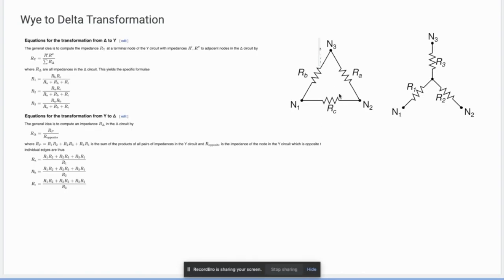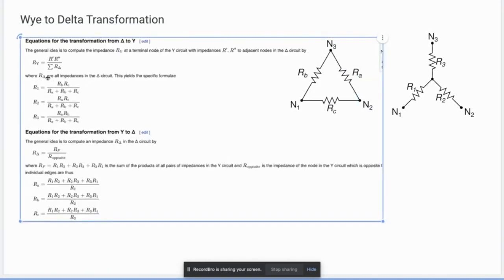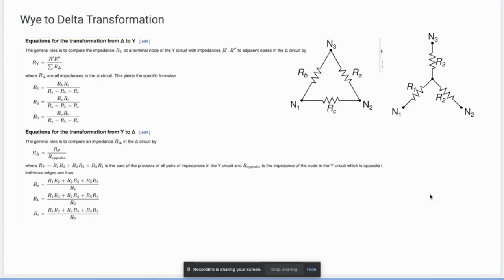Here, R delta are all the impedances in the delta circuit, which leads to the formula. The R of the resistor Y will be the product of the adjacent divided by the sum of the resistors or impedance.